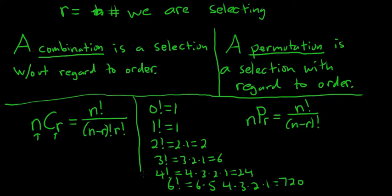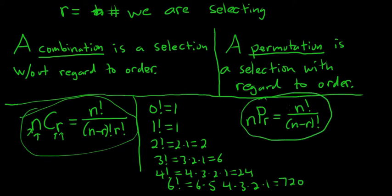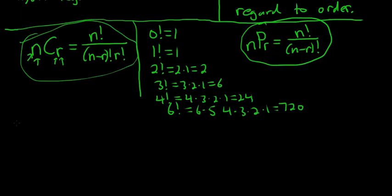So let's do a simple example and see if we can decipher which one to use, combinations or permutations. This formula tells you how many combinations there are. So how many ways can we select r objects from a group of n without regard to order? This formula over here tells us how many ways can we select r objects from a group of n with regard to order. So key concept, permutations, order matters, combinations, order does not matter. Let's do some simple examples.